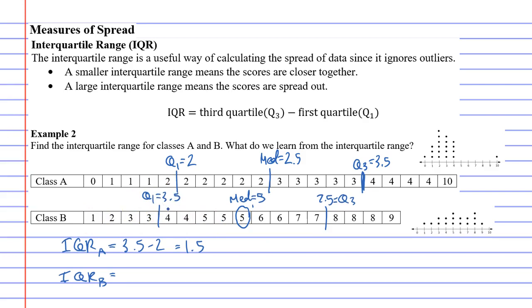Okay, so when we do the interquartile range, that's 7.5. For class B, we're going to go 7.5 minus 3.5, which gives us a 4.